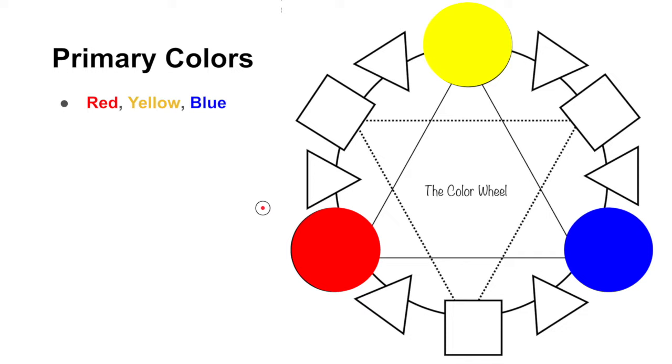And the primary colors can't be made from any other colors, and that's why we call them primary, because it means first. So the first colors, they're number one in our book.